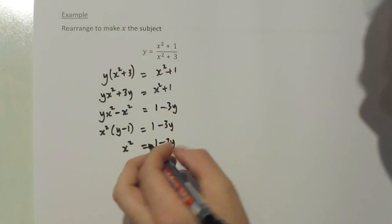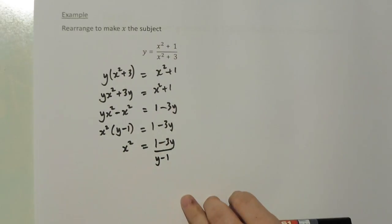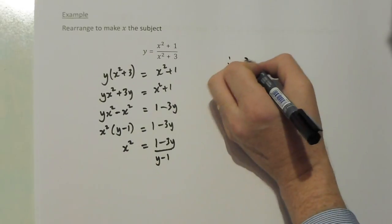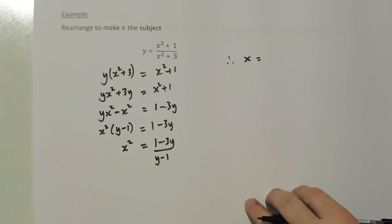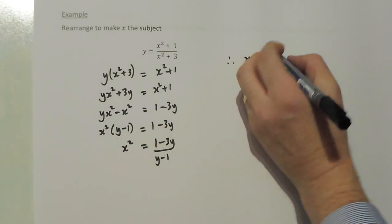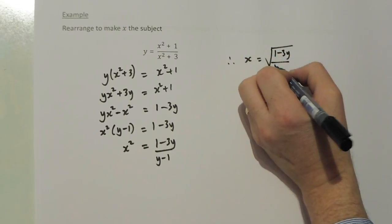I am doing the reverse process of what I started with, so bracket becomes divided by bracket. Finally, x squared I want to write as x, and the opposite of squaring a number is square root. So I square root the expression that I have on that side.